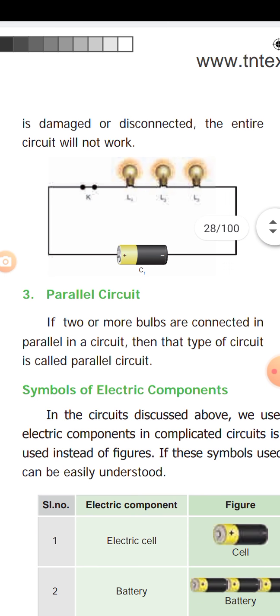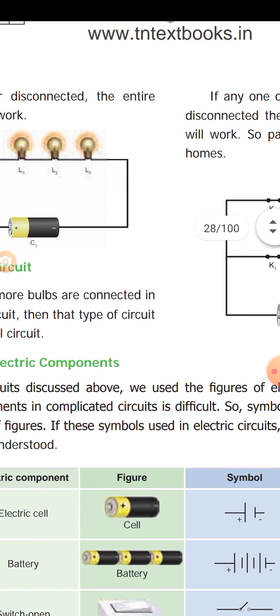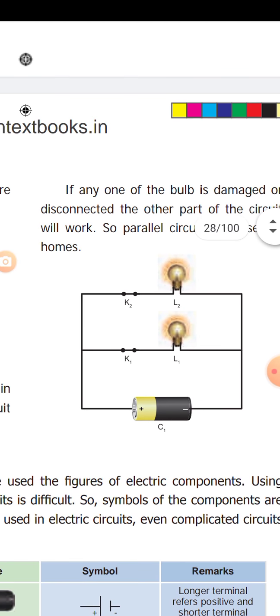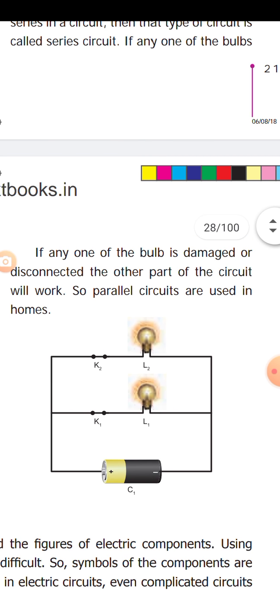Then parallel. This is a parallel circuit. If two or more bulbs are connected in a parallel circuit, then it is called a parallel circuit. This is a circuit diagram. If any one bulb is damaged or disconnected, then the other part of the circuit will still work. This is a parallel circuit.